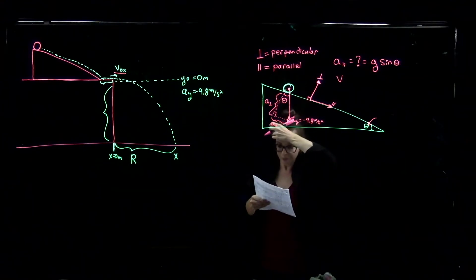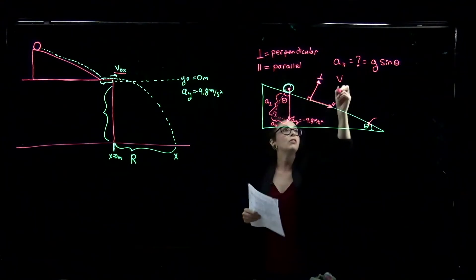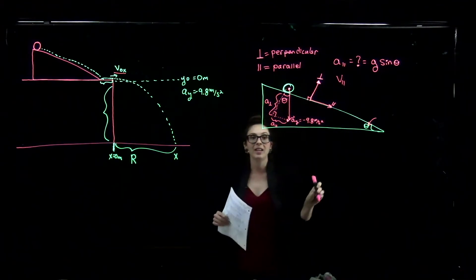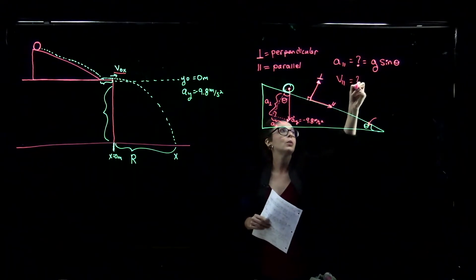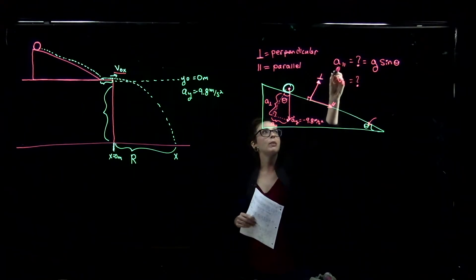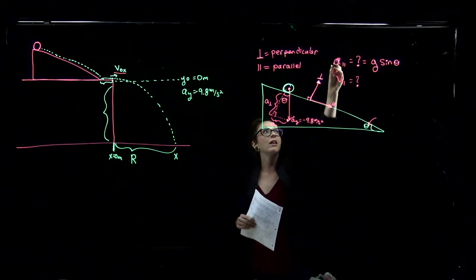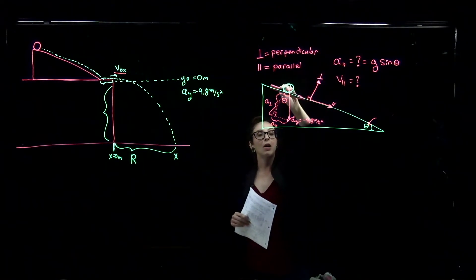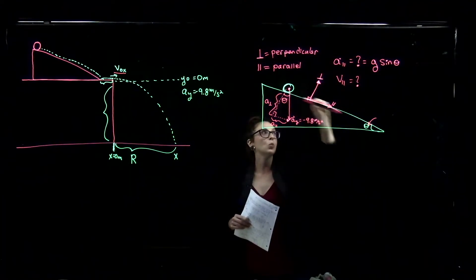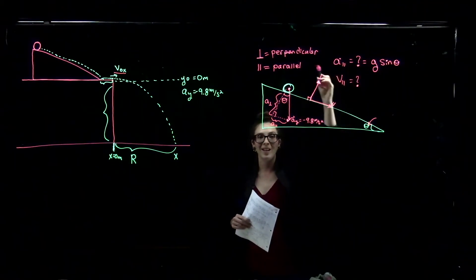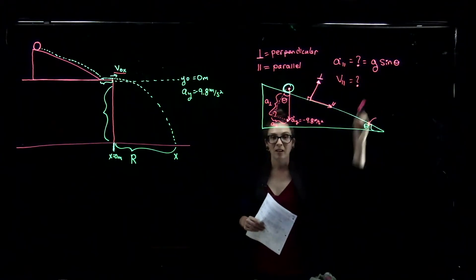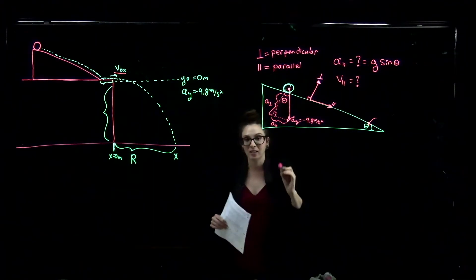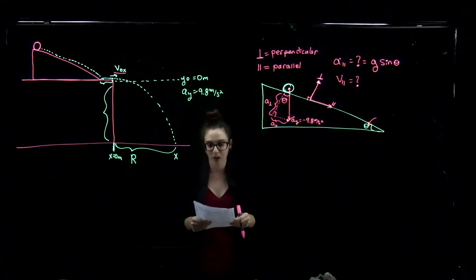We'll call that V_parallel — the velocity of our ball parallel to the plane — and set it equal to the unknown. From the previous problem, we already determined the acceleration parallel to the plane, which is G sine theta, where G is positive 9.8 meters per second squared.